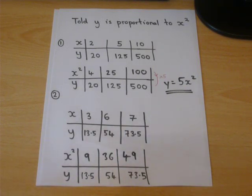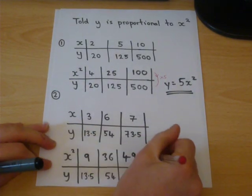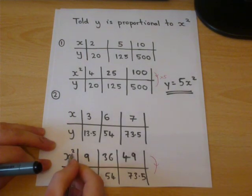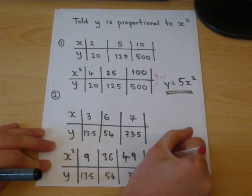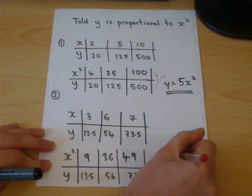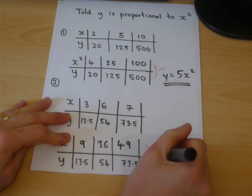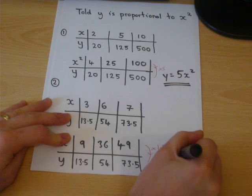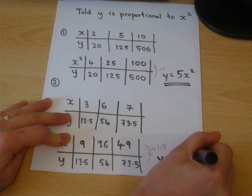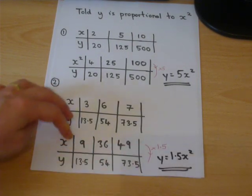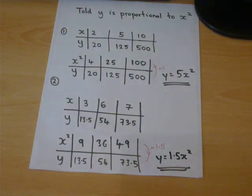If you do 73.5 divided by 49, you get 1.5. So the pattern is times the x squared values by 1.5. So we can finish off by saying that y equals 1.5 times by x squared and not x, because y was proportional to x squared.